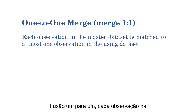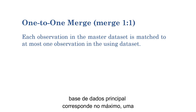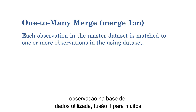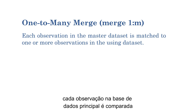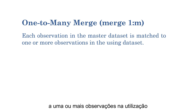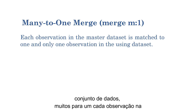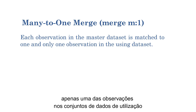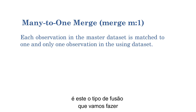In a one-to-one merge, each observation in the master dataset is matched to at most one observation in the using dataset. In a one-to-many merge, each observation in the master dataset is matched to one or more observations in the using dataset. In many-to-one, each observation in the master dataset is matched to one and only one observation in the using dataset.